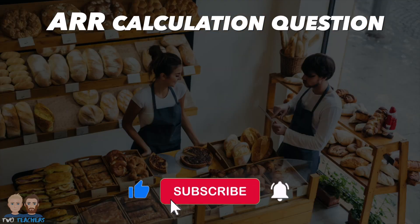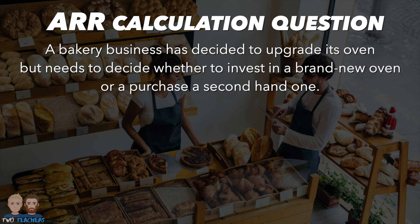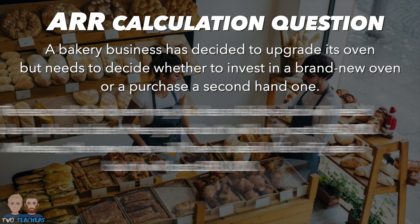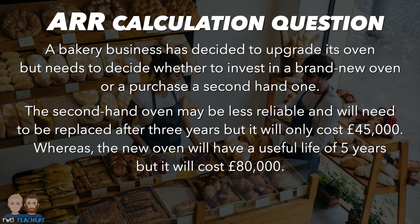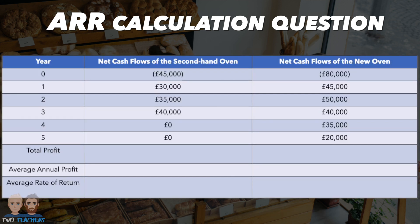Now it's your turn to have a go at calculating the average rate of return. In this scenario, a bakery business has decided to upgrade its oven but needs to decide whether to invest in a brand new oven or purchase a second-hand one. The second-hand oven may be less reliable and will need to be replaced after three years, but it will only cost £45,000, whereas the new oven will have a useful life of five years but it will cost £80,000. Your task is to calculate the average rate of return for both options to identify which one would be the better investment for the business. You can pause your screen now to attempt the question.